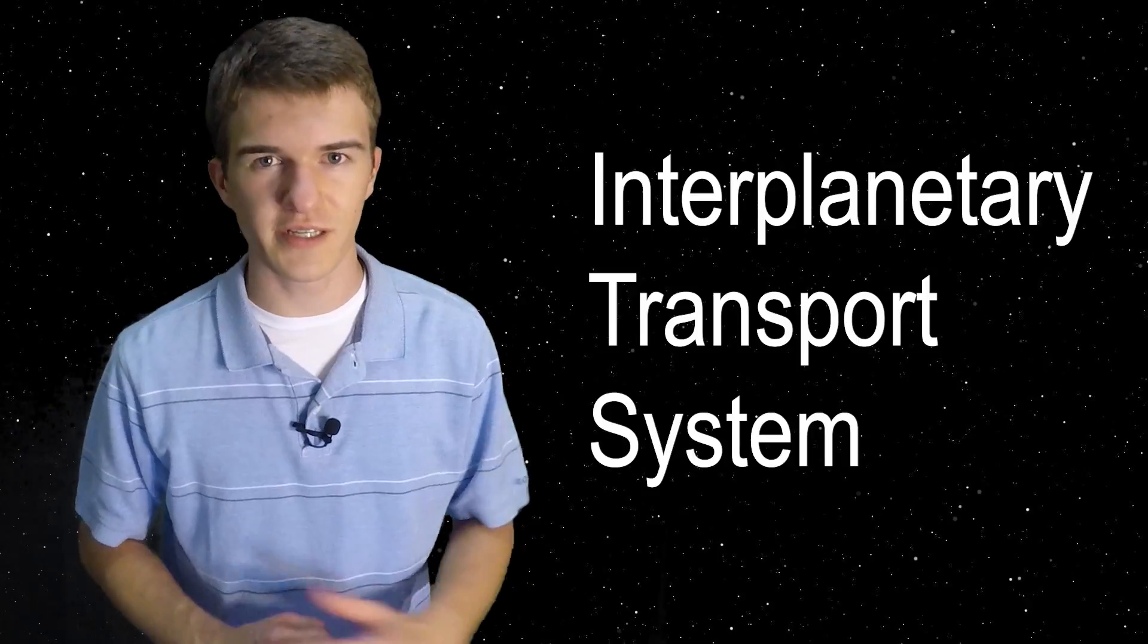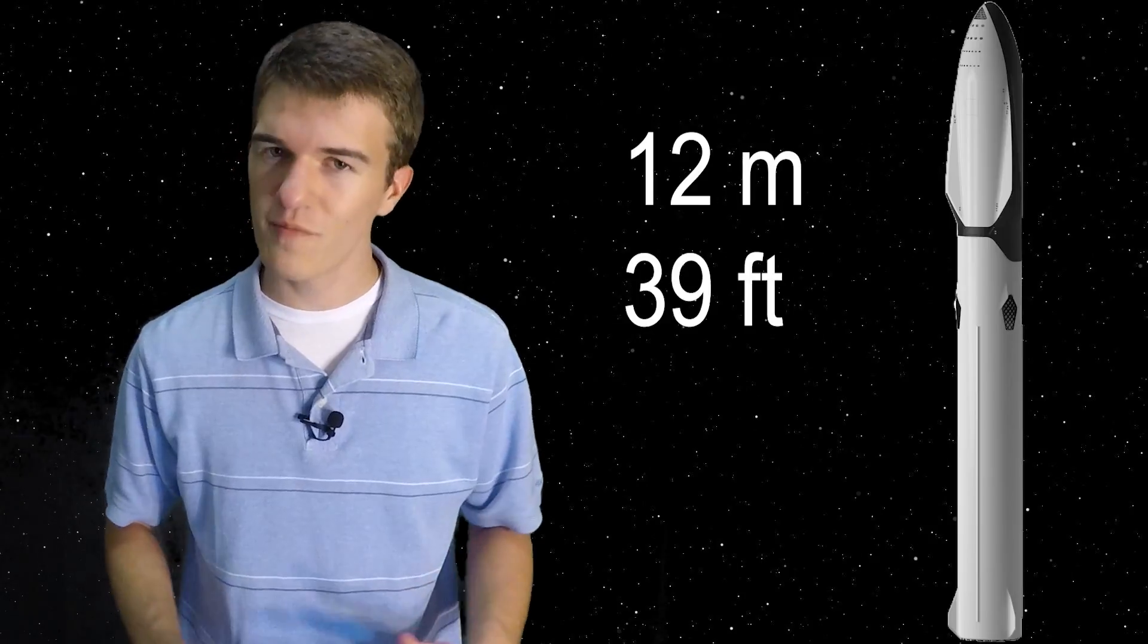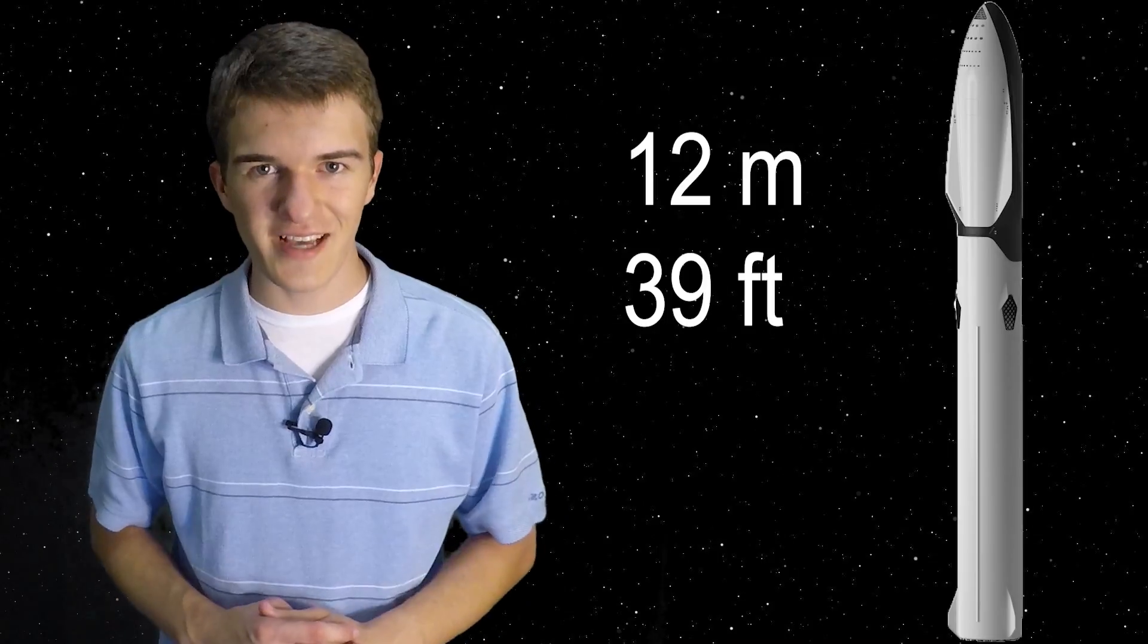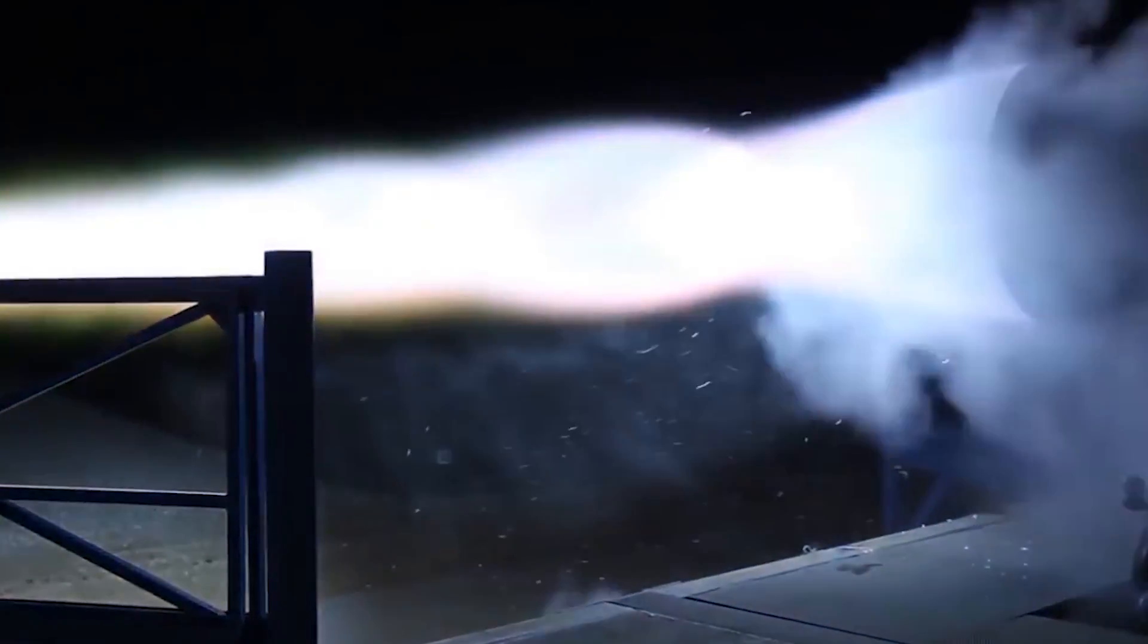This was a setback for the company, but not as much as some of their previous failures. And this goes to show mainly because Elon Musk went out just a few weeks after this event and announced their new rocket they were going to be developing, the Interplanetary Transport System, or ITS for short. ITS would stand 122 meters tall, 12 meters in diameter, and consist of 42 Raptor engines. This would make the ITS launch vehicle three to four times stronger than the Saturn V, or the rocket that took the Apollo missions to the moon.